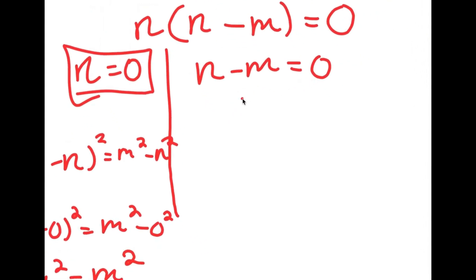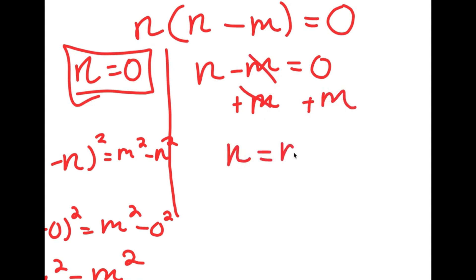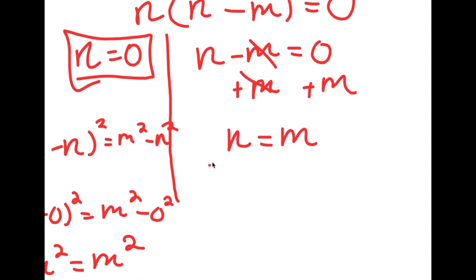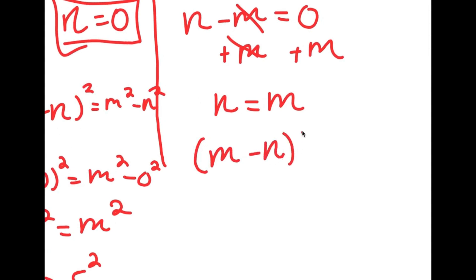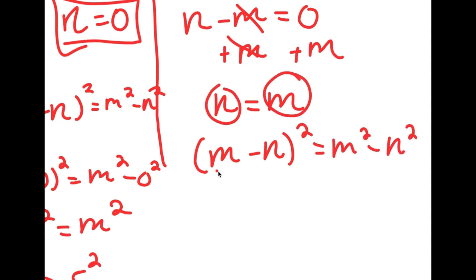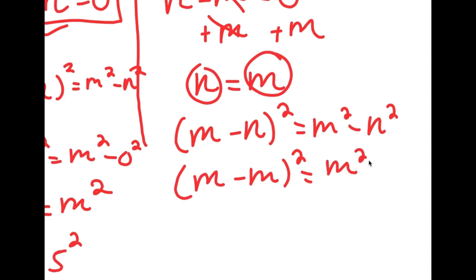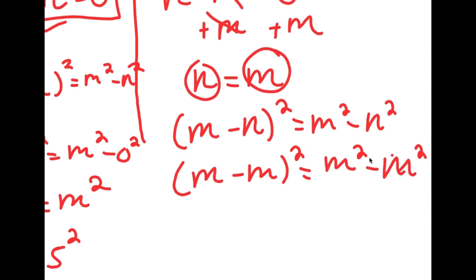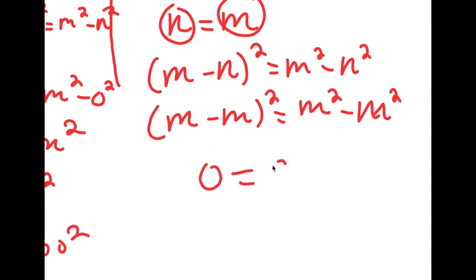For the second solution, n minus m equals zero means n equals m. Substituting back into the original equation gives m minus m squared equals m squared minus m squared. Since m minus m is zero, this becomes 0 equals 0, confirming the solution is valid.